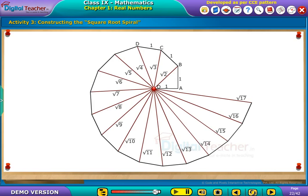Note that the line segments OA, OB, OC, OD and so on represent the lengths 1, root 2, root 3, root 4 and so on respectively.